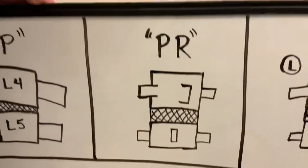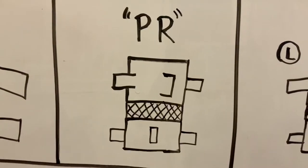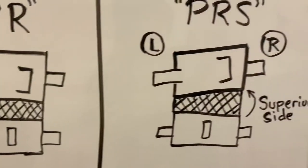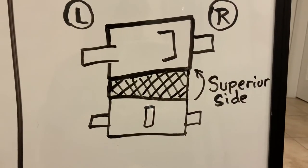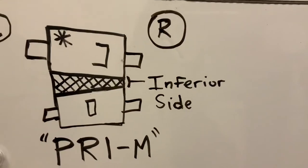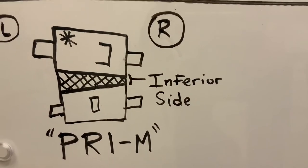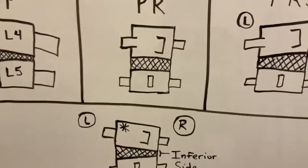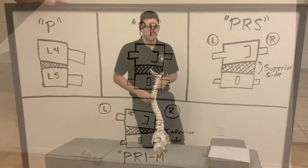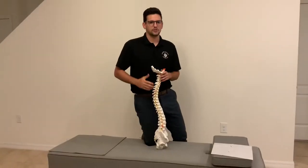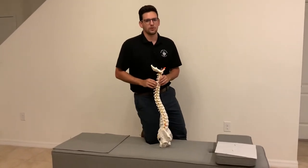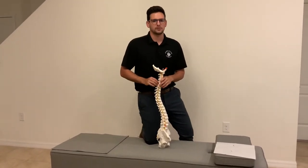So we first describe which side the spine is rotated to, then we describe if that is the superior side of the wedge or the inferior side of the wedge. This is going to be the same for PL listings as it is for PR listings. Alright guys, moving right along, we're going to show you some corrections for these misalignments we just described.